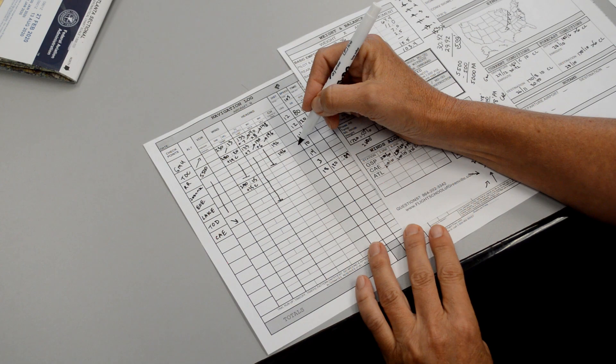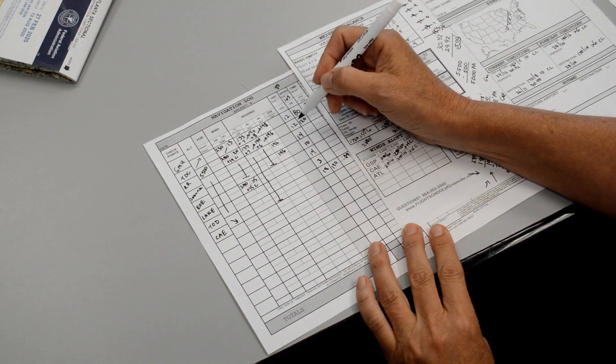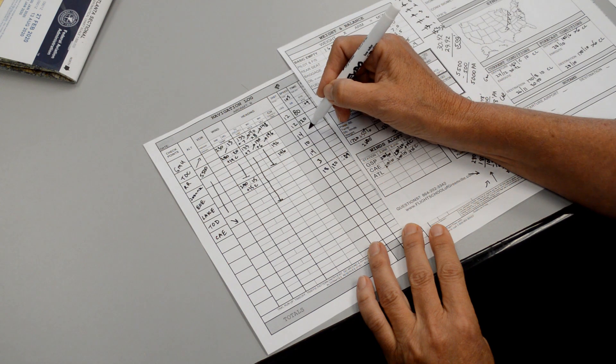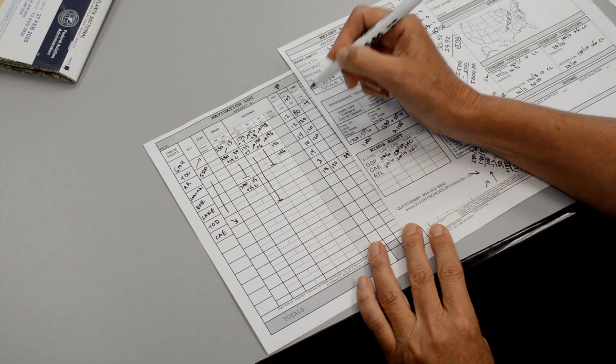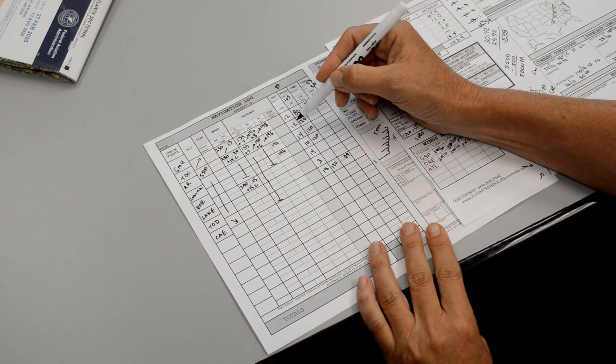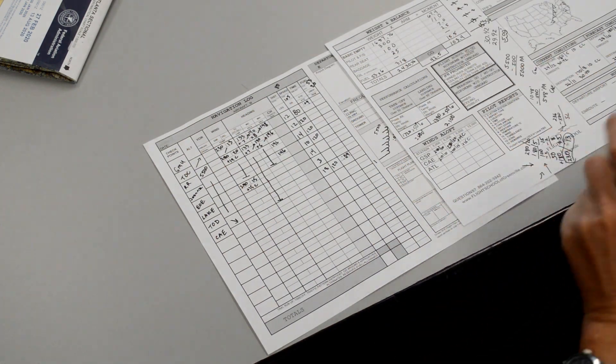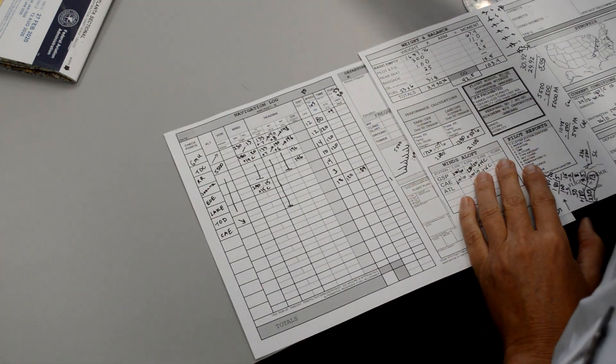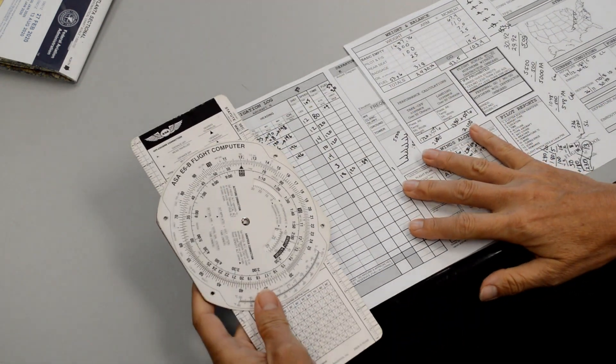Course heading, we're going to get to that later. The distances we have calculated out, and we know our ground speed for this portion. So we can fill this in. And now we have two pieces of the puzzle. We need the third. So therefore we'll go to the E6B calculator side to find the answer.